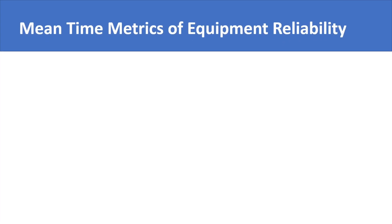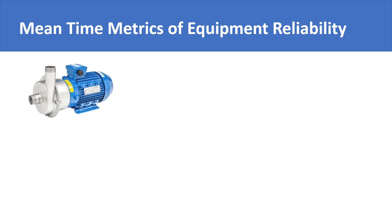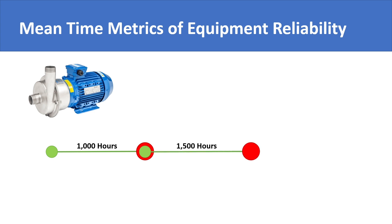These include mean time between failures and mean time to failure. Let's say there is a pump that starts operation. It runs for 1,000 hours and experiences a failure. The maintenance team repairs the pump and puts it back into service. The pump runs for 1,500 hours and experiences a failure again. The maintenance team repairs the pump again, and it runs for 1,200 hours before failing once more.